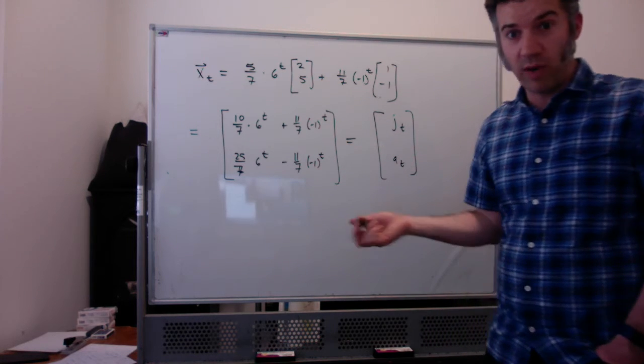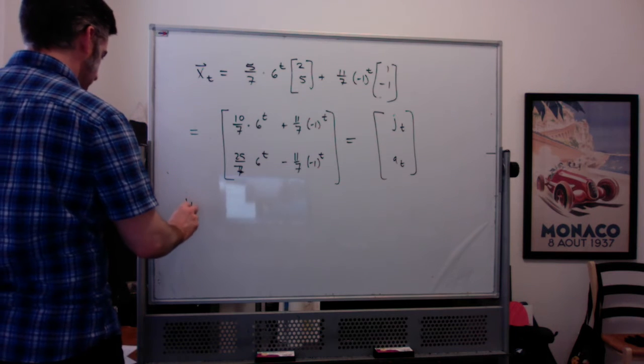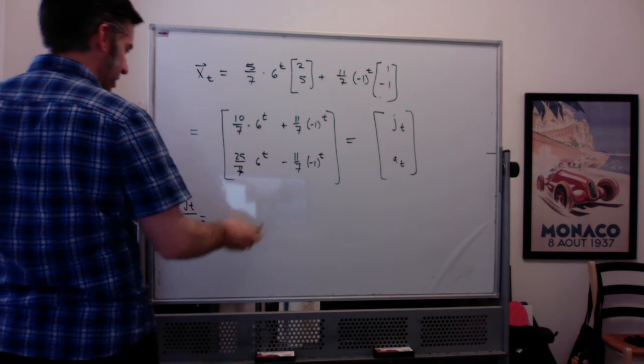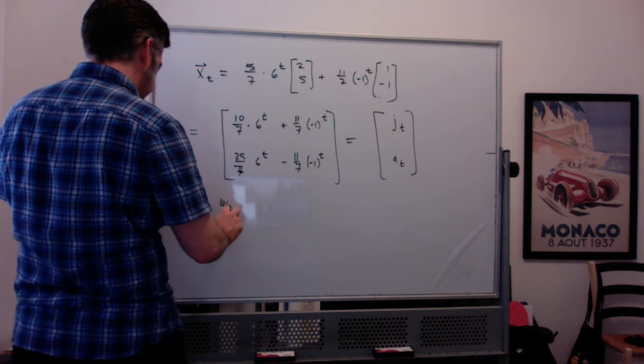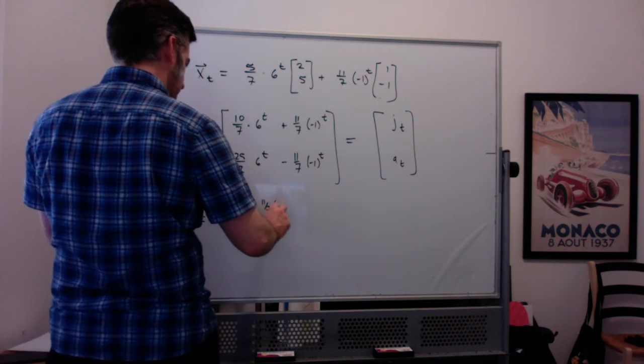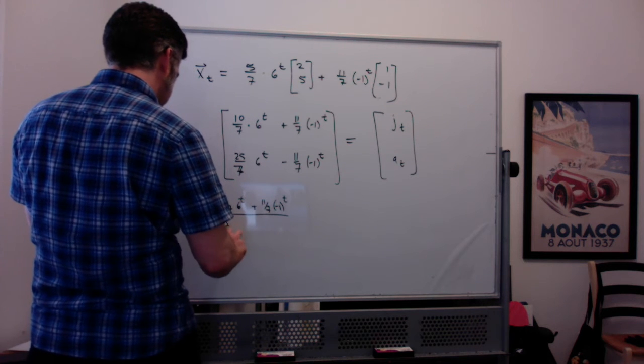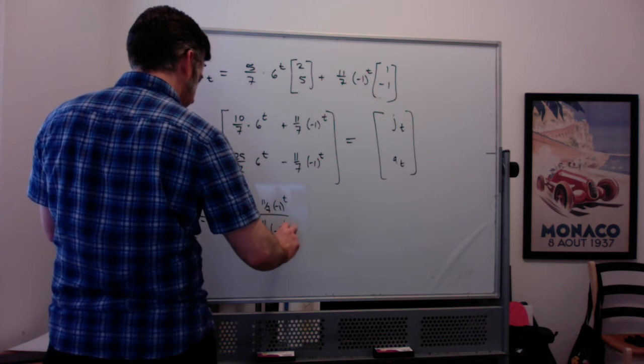So if you want to know the ratio of juveniles to adults, you take Jt divided by At, that's just this number divided by this, which is going to be kind of gross, but bear with me for a moment. So 10 sevenths times 6 to the t, plus 11 sevenths times negative 1 to the t, divided by 25 sevenths, 6 to the t, minus 11 sevenths, times negative 1 to the t.